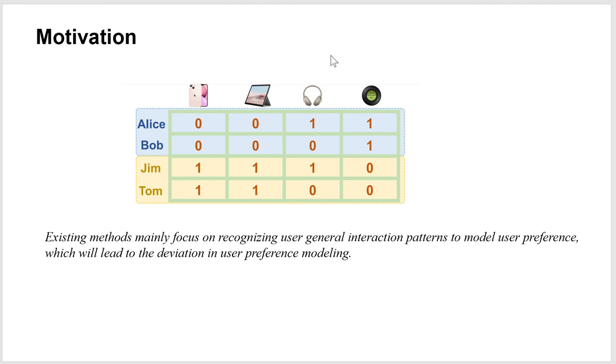This figure shows a toy example. We can observe that different users have different interaction behaviors. Alice and Bob tend to interact with music items, but Jim and Tom prefer electronic products. When predicting Alice's future interactions, her prediction results will be affected by other users who have different preferences, such as Jim and Tom, thereby affecting the accuracy of her future interaction predictions.